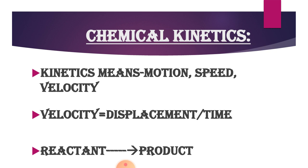In a chemical reaction, the reactant is being converted into the product. So here the initial position of the chemical reaction is your reactant, and the final position is your product. The chemical reaction has moved from the initial position of reactant to the final position of product.